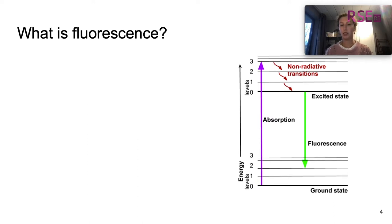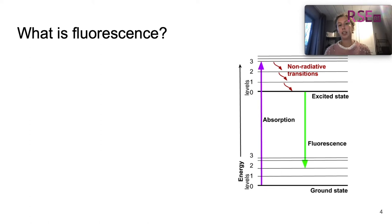As you can see, we indicate this by a green arrow, meaning that the fluorescence happens at a different wavelength than the absorption has taken place.